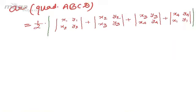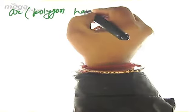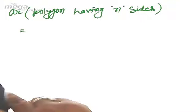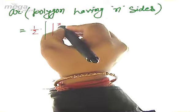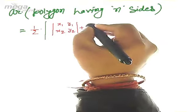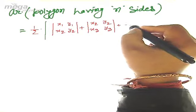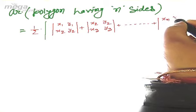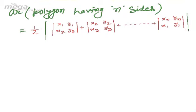From here, the area of a polygon having n sides and n vertices from (x1,y1) to (xn,yn) is: Area = ½ × |det(x1,y1; x2,y2) + det(x2,y2; x3,y3) + ... + det(xn,yn; x1,y1)|. The sum of 2×2 determinants cycles through all consecutive vertex pairs and ends back at the first vertex.